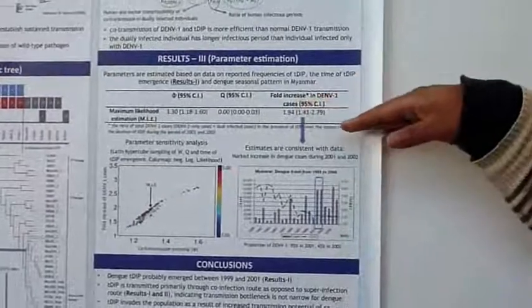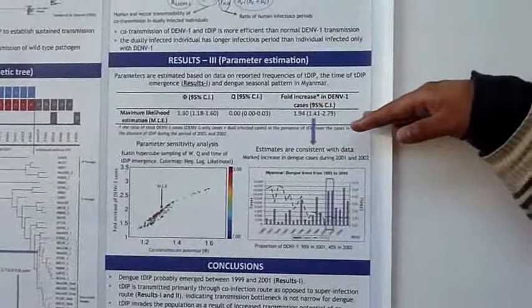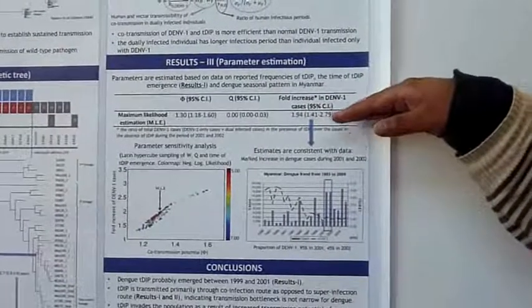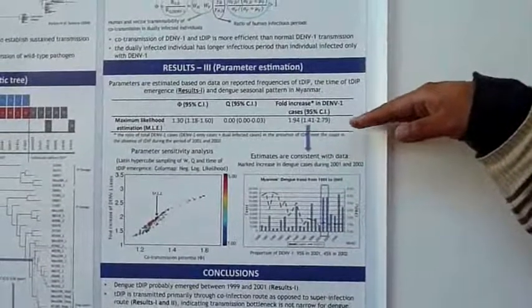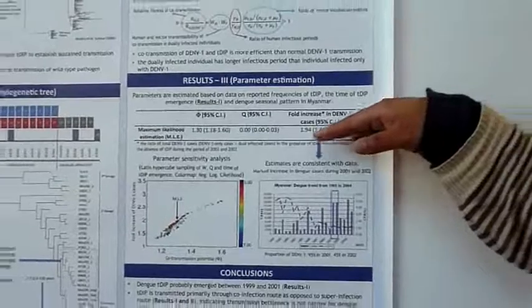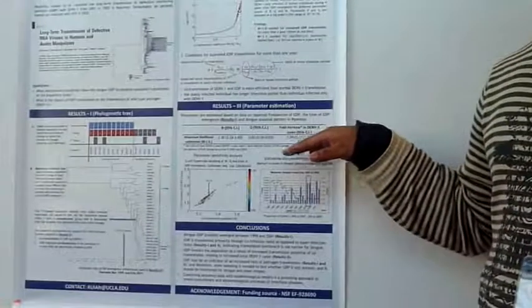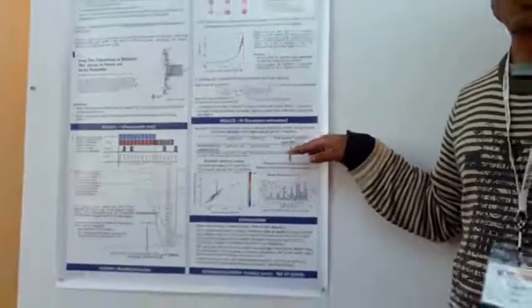Using this value, we further estimated the impact of defective interfering particle on the wild-type Dengue transmission, which is estimated as a 2-fold increase during 2001-2002.